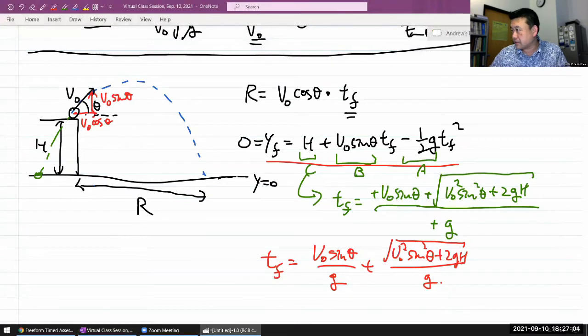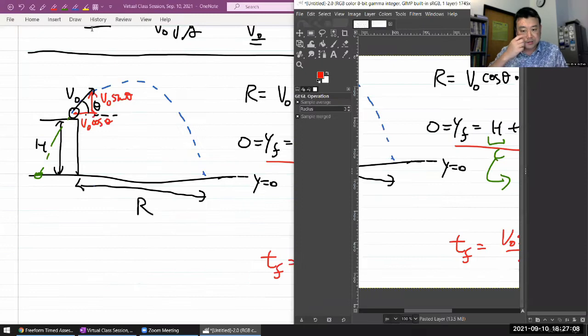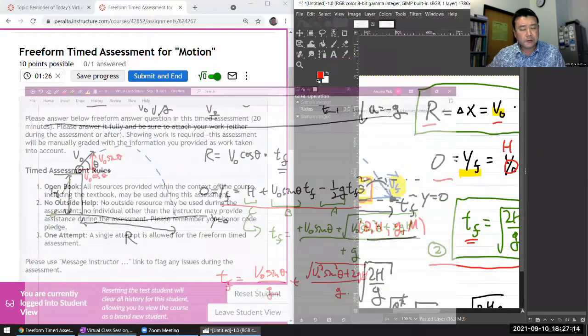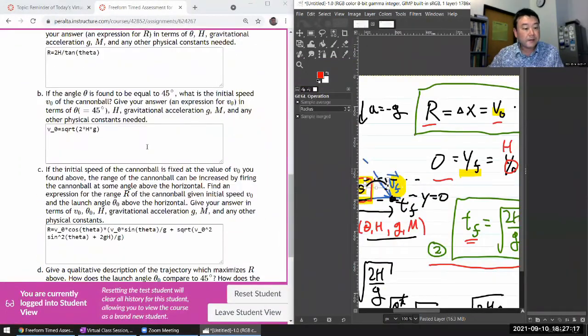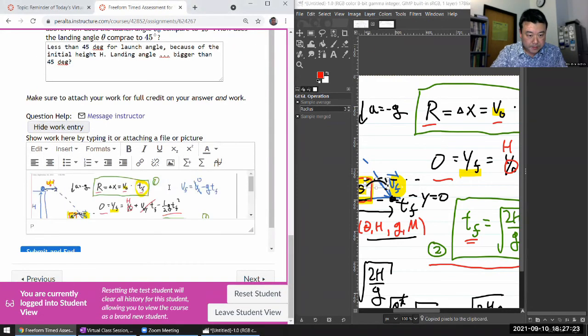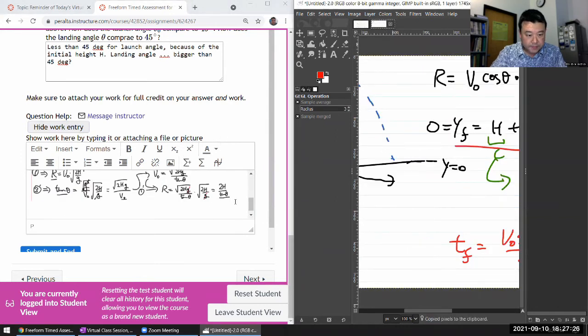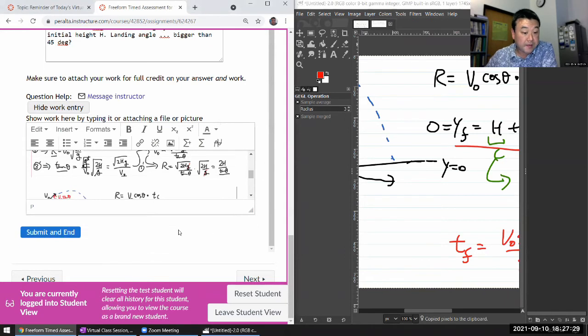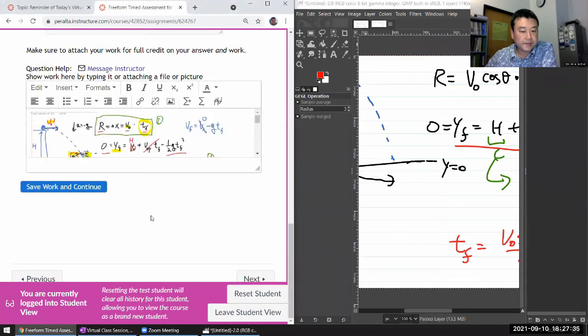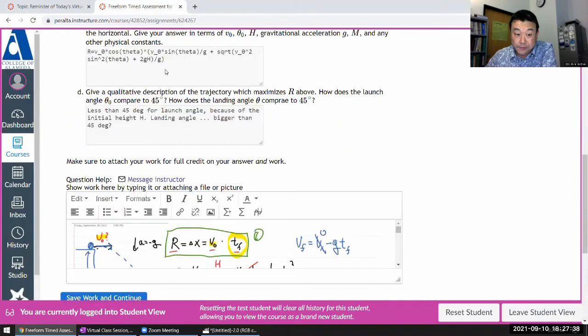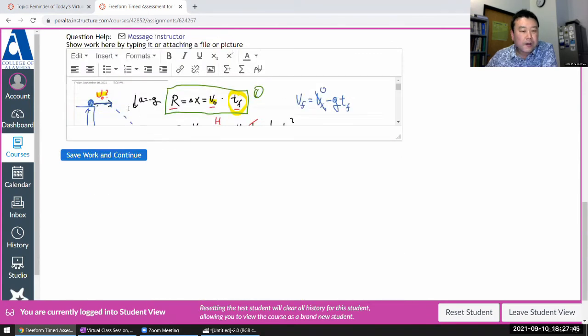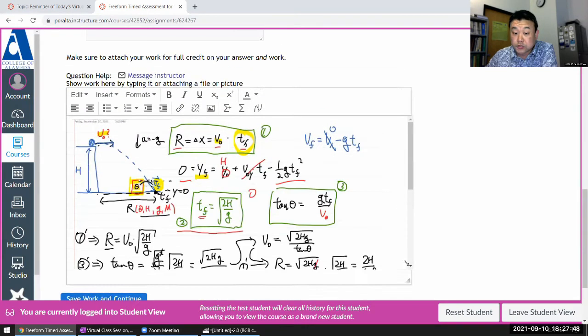So in my case, this portion was slightly quicker, just because I had already worked it on a computer. But most people, I do recommend you working on paper, so you will need time to scan in and all that. So let me just put in my work for now, and then paste it. And then I will submit and end. After having done that, it'll give you an option. Save this work and continue.